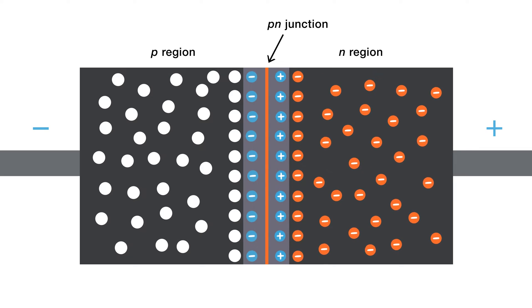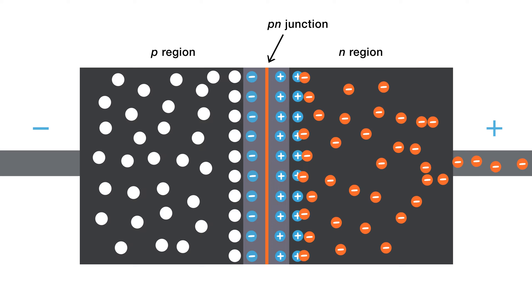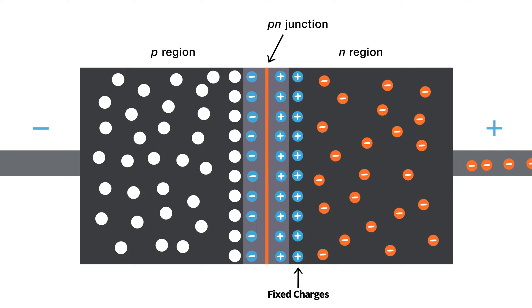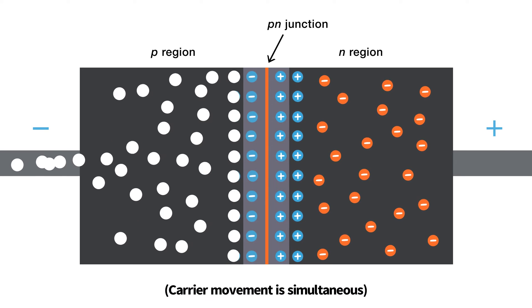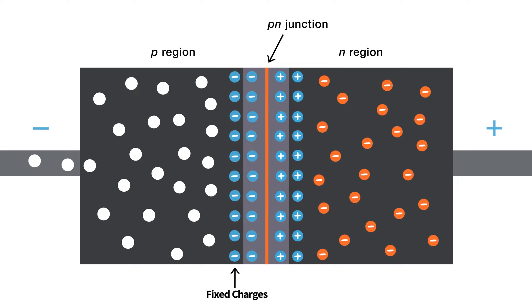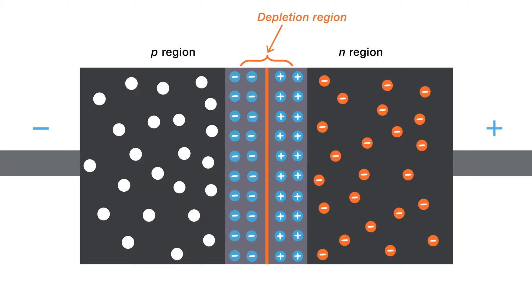In this case, the free electrons, which are the majority carriers in the N region, are pulled by the positive side of the external bias voltage, creating more positive charges near the PN junction. The same thing happens in the P region. The holes, which are the majority carriers, are pulled by the negative side of the external bias voltage and more negative charges are being created near the PN junction. This results in a widening of the depletion region and increase in the strength of the electric field between the positive and negative charges.